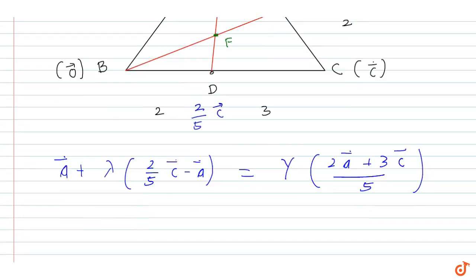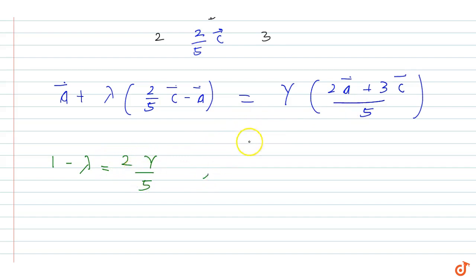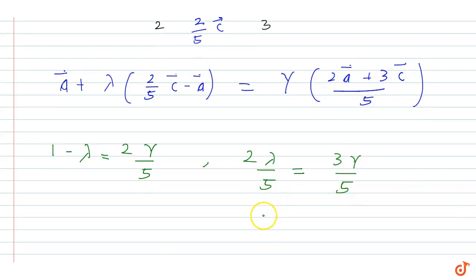Since both lines intersect at point F, the two expressions are equal. Since A vector and C vector are non-collinear, their coefficients must be equal. The coefficient of A vector gives: 1 minus lambda = 2 gamma / 5. The coefficient of C vector gives: 2 lambda / 5 = 3 gamma / 5.